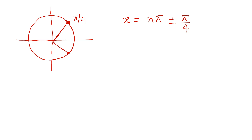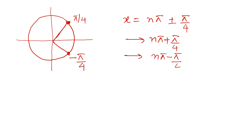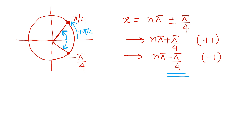On the unit circle, we can see nπ + π/4 corresponds to tan x = +1, and nπ − π/4 corresponds to tan x = −1. For n = 0, the value is π/4 for the plus case, and −π/4 for the minus case. This angle is +π/4 and this angle is −π/4.